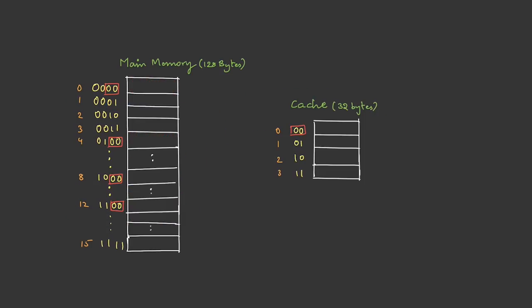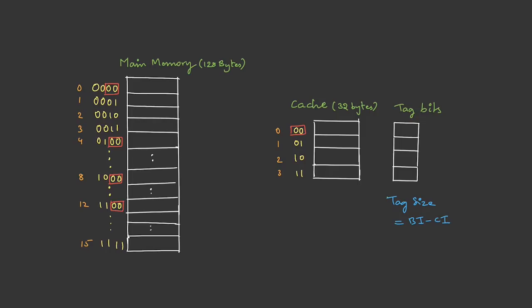So line 0 can hold blocks 0, 4, 8, and 12. For the CPU to understand which block is present in the cache, it maintains some extra information bits called tag bits. For each line, the CPU holds tag bits. The tag bit size is block index bits minus cache index bits. Here cache index is 2 bits and block index is 4 bits, so tag size is 4 minus 2 equals 2 bits. So we need 2 bits for each line.